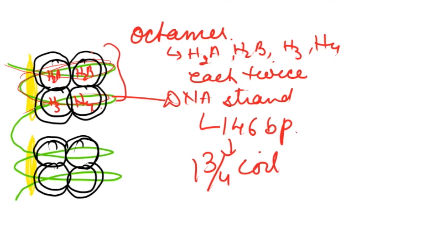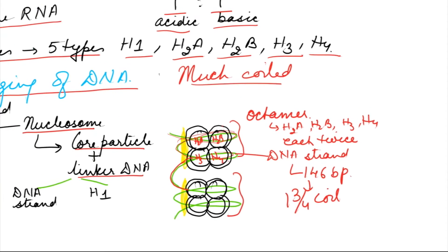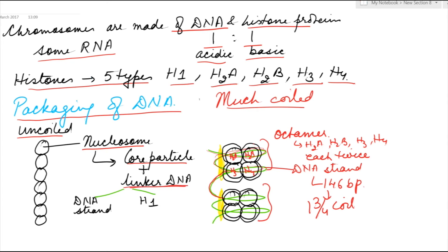Joining two core particles is the linker DNA. The linker DNA is made up of a DNA strand of approximately 80 base pairs plus the H1 histone protein.